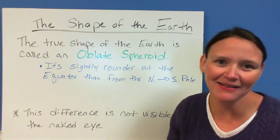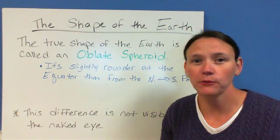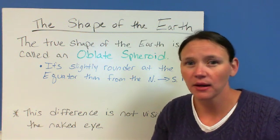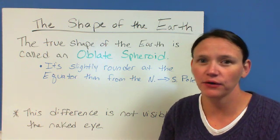So again, it's not something that we can see just by looking. So if you were to make a model of the Earth, it would look pretty much round. But the technical term is an oblate spheroid.